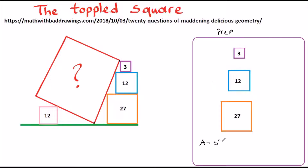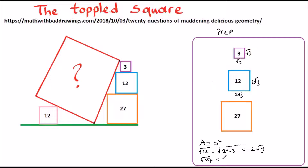As our prep, let's find the dimensions of each square. The area of a square is one of the sides squared, so the dimensions of the purple square is √3 by √3. The dimensions of the blue square is √12 by √12, and breaking it into prime factors: 2² × 3 = 2√3, so the blue square is 2√3 by 2√3. Similarly, the dimensions of the orange square is √27 by √27, which is 3² × 3 = 3√3, so the orange square is 3√3 by 3√3.